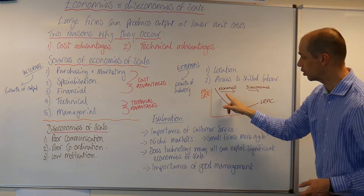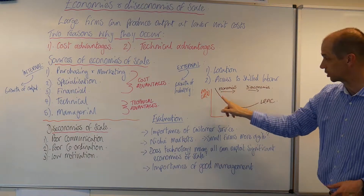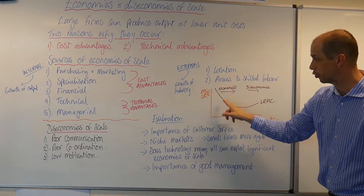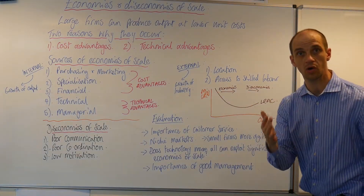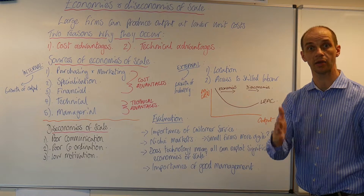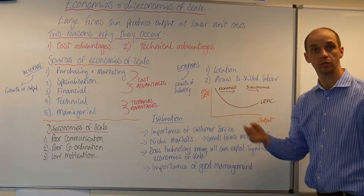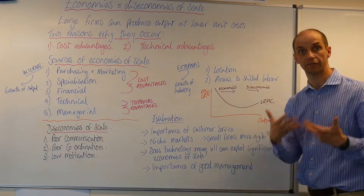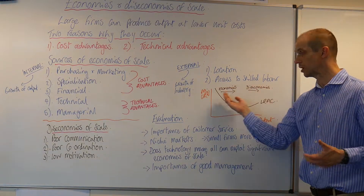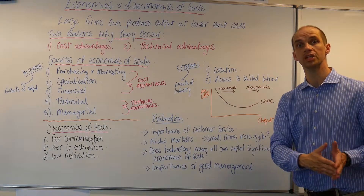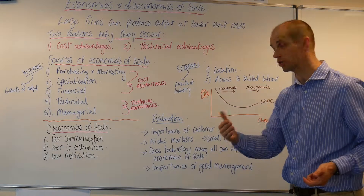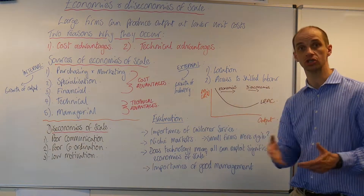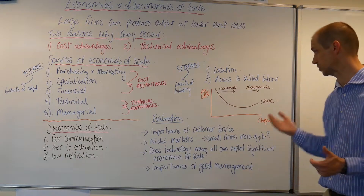We can see these economies of scale being exploited as the long-run average total cost curve falls — these are increasing returns to scale. With increasing returns to scale, you might increase your factor inputs by 100%, but you may generate a 200% or 300% increase in your total output level, and as such you have much lower unit costs.